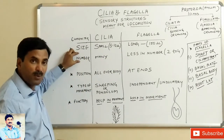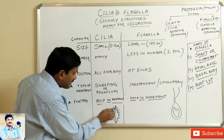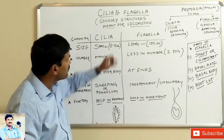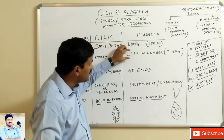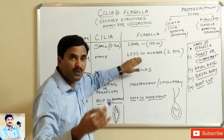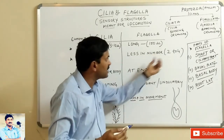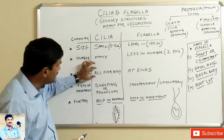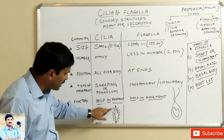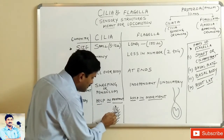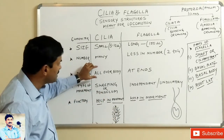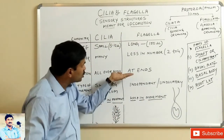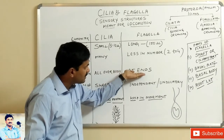If we talk about number, cilia are many — they may be in hundreds or thousands. But the number of flagella is restricted; they are two, four, or maximum eight, generally two to four. Regarding position, cilia are present all over the body — as seen in the diagram of Paramecium — while flagella, as in Chlamydomonas, are present at the ends.